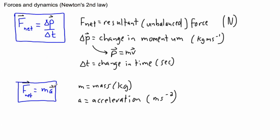Remember: a vector has both a direction and a magnitude. Force is a vector and acceleration is a vector, but mass is a scalar — just like time is a scalar. The acceleration will be pointing in the same direction as the net force. Acceleration is defined as the change in velocity over a change in time.